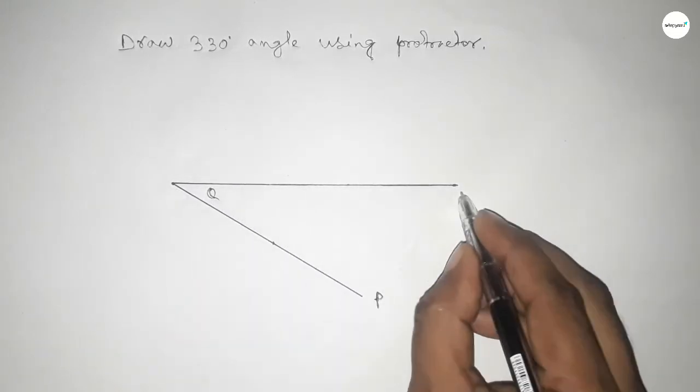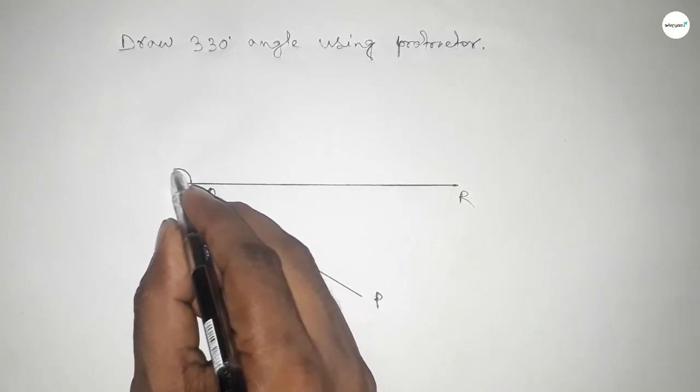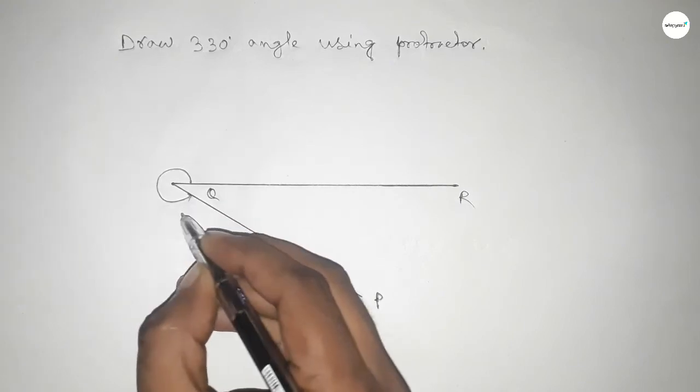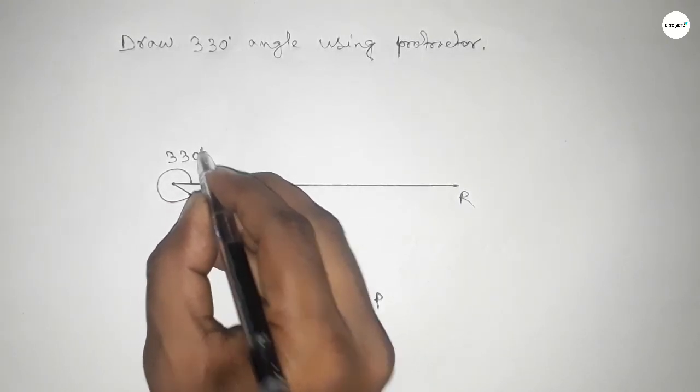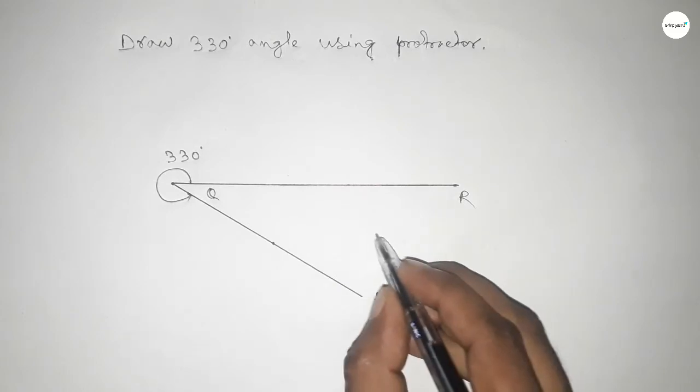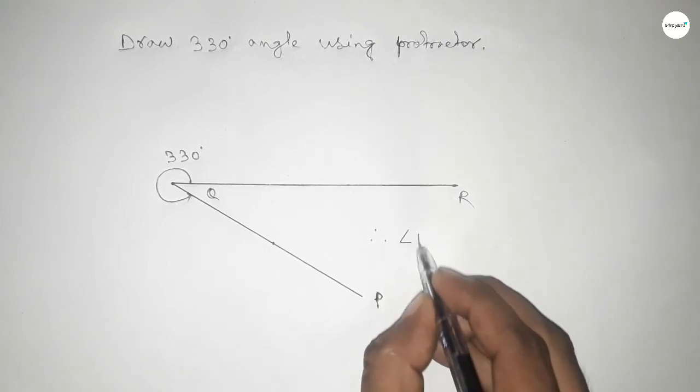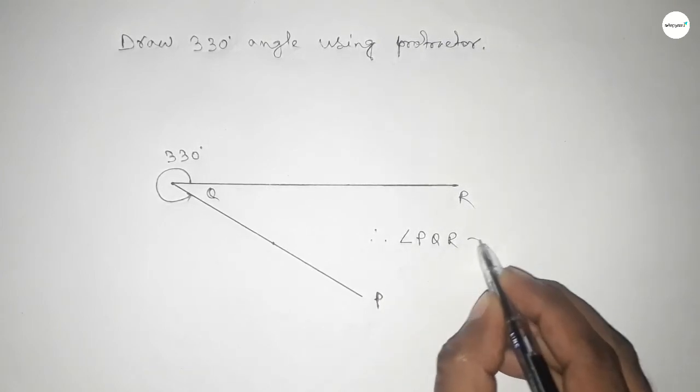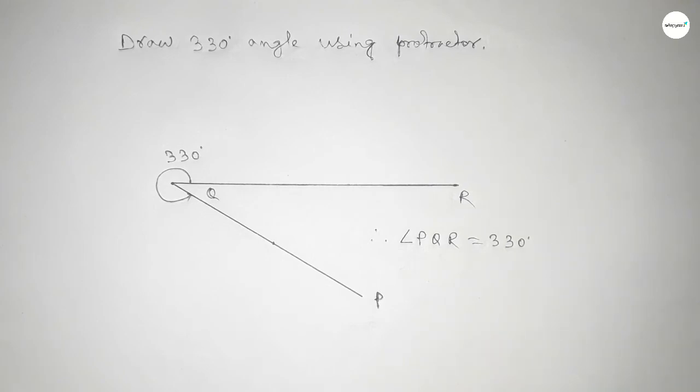So this is PQR and angle PQR. This is 330 degree angle. Therefore, angle PQR equal to 330 degree angle. That's all, thanks for watching. If this video is helpful to you, then please share it with your friend.